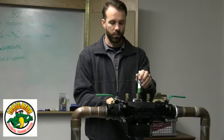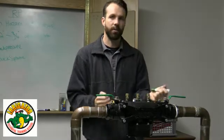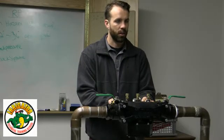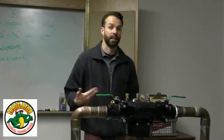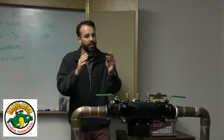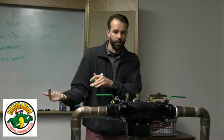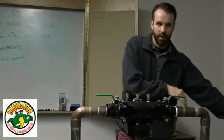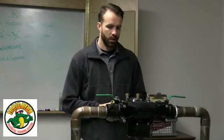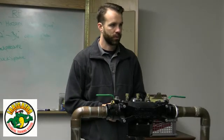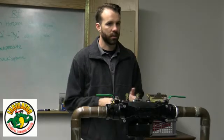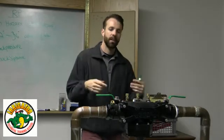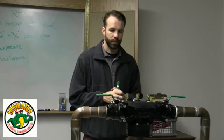So this reduced pressure principle in any of the backflows, what they do is they actually lower the pressure. So that brings us back to the name, RP, reduced pressure principle. So this keeps the water from being reversed by lowering the pressure to my irrigation side. Does that make sense? Yeah. Okay, so I'll go over how it does it and everything like that, just so we get that in our heads.